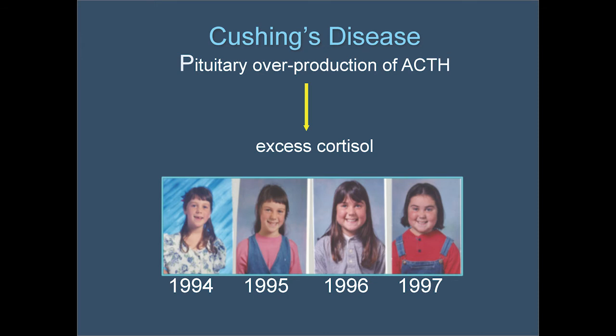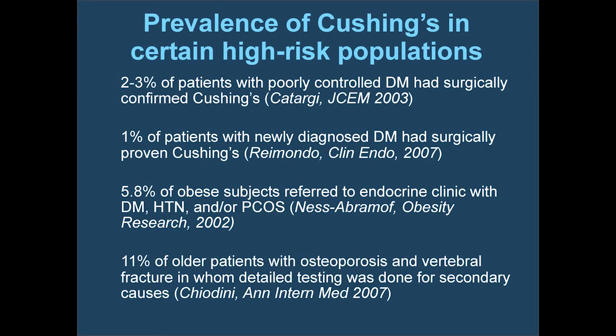For Cushing's disease, the pituitary makes too much ACTH, causing excess cortisol, with progressive changes including weight gain, facial swelling, buffalo hump, striae, hypertension, and diabetes. A critical challenge is confirming the diagnosis — the endocrinologist is essential here. In high-risk populations: 2–3% of poorly controlled diabetics have Cushing's; 1% of newly diagnosed diabetics have surgically proven Cushing's; almost 6% of obese patients referred to an endocrine clinic with these features have Cushing's; and 11% of older patients with osteoporosis and vertebral fractures had Cushing's when evaluated.